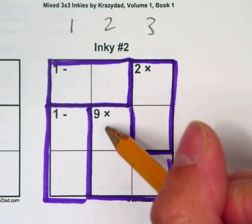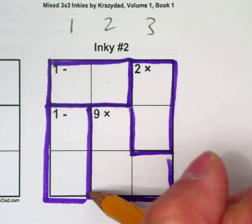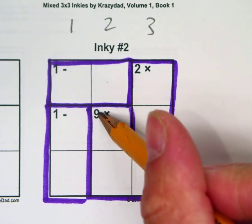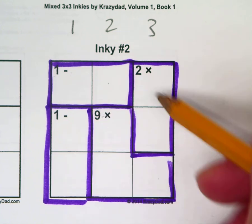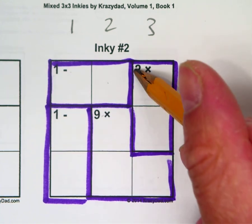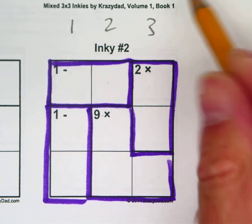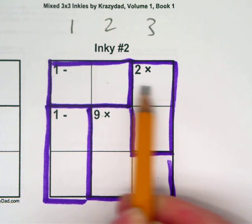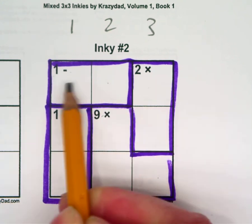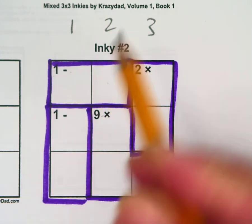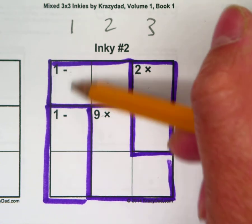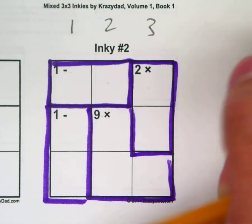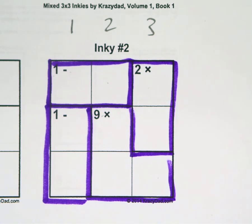So for example, in this cage there are 3 boxes and these 3 numbers need to multiply to be 9. These need to be multiplying to be 2. Now I have to use for each row the numbers 1, 2, and 3. And this one is called a column — in a column I need the numbers 1, 2, and 3. This is just like a Sudoku.